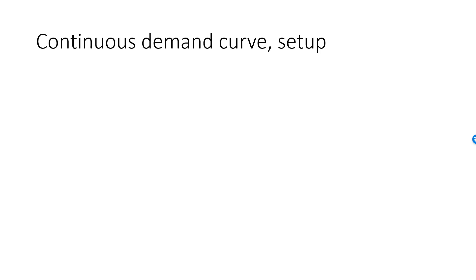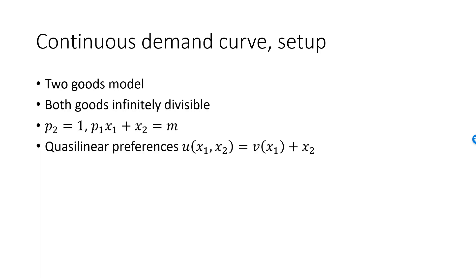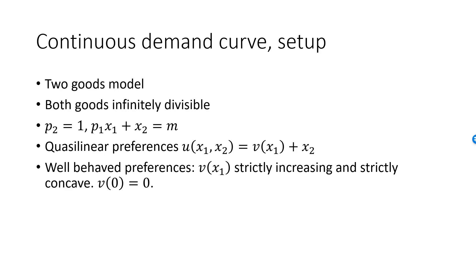This is the model we will consider. It's a two-goods model, where both goods are infinitely divisible. Our focus is on the demand for good one, so we keep normalizing the price of good two to be equal to one. P1 x1 plus x2 is equal to m. We still have quasi-linear preferences and they are well-behaved. V is strictly increasing and strictly concave. Also, we normalize V of zero to be equal to zero.